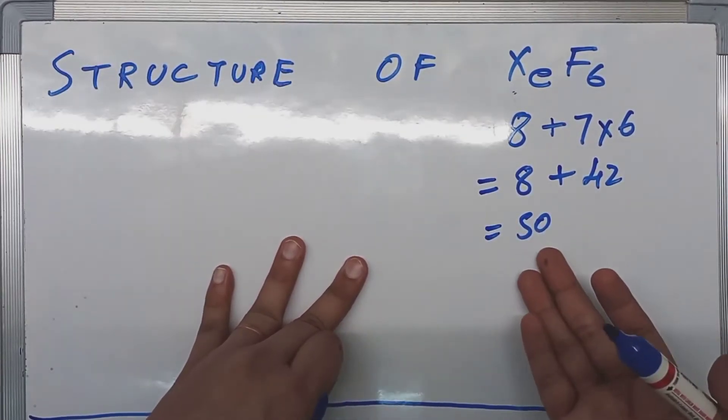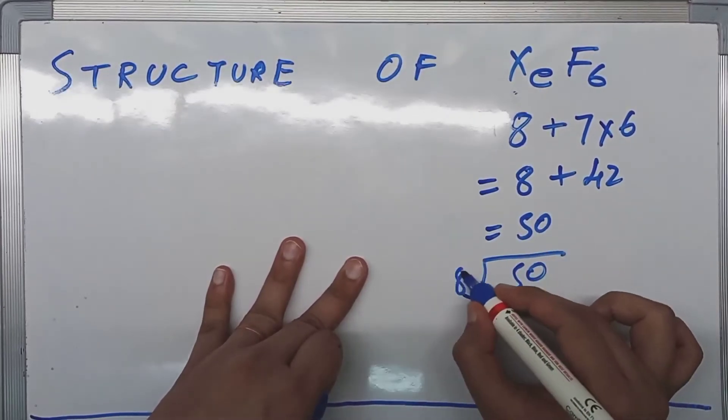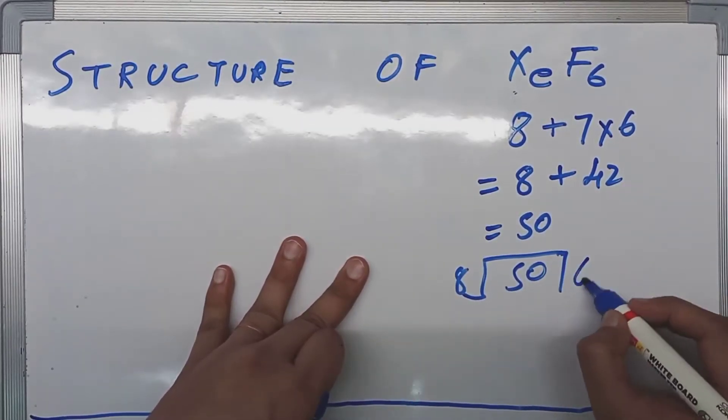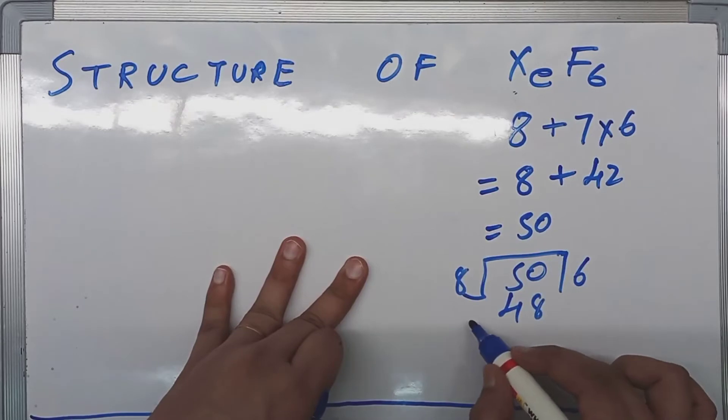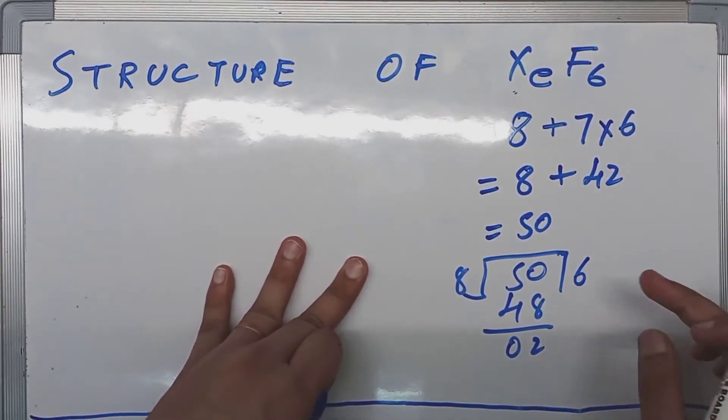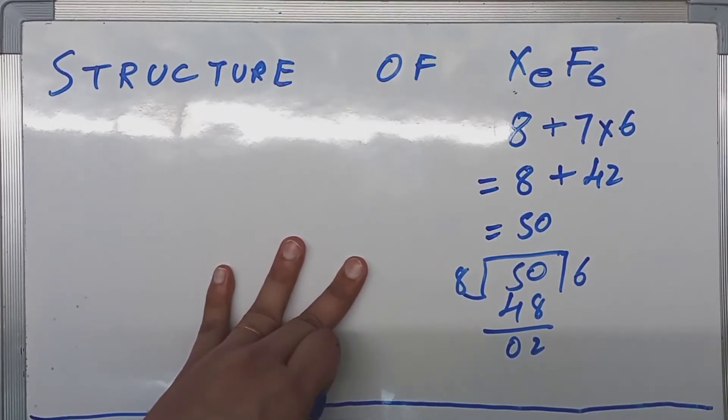We have to divide this 50 by 8. So 50 by 8, 6, 48, and we have 2 in the remainder, and in the quotient we have got 6.